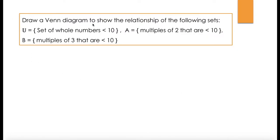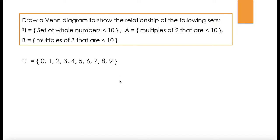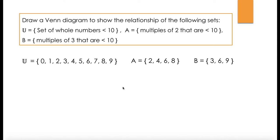Next question: draw a Venn diagram to show the relationship of the following sets. U is the set of whole numbers less than 10, so 0 through 9. A is multiples of 2 less than 10: {2, 4, 6, 8}. B is multiples of 3 less than 10: {3, 6, 9}.